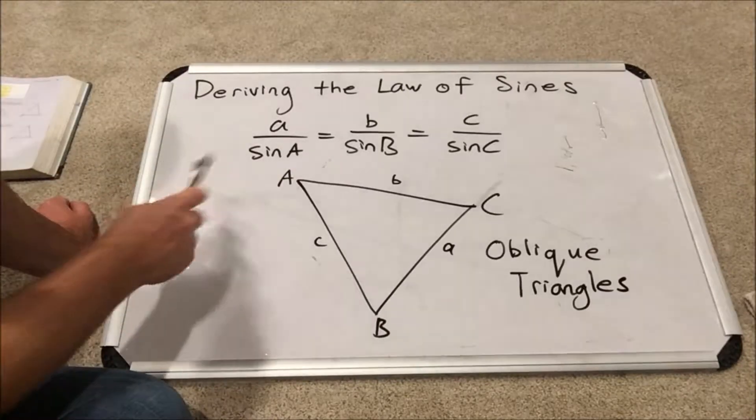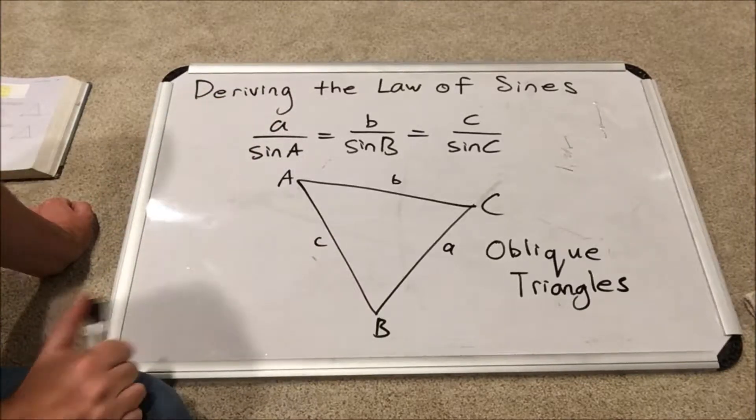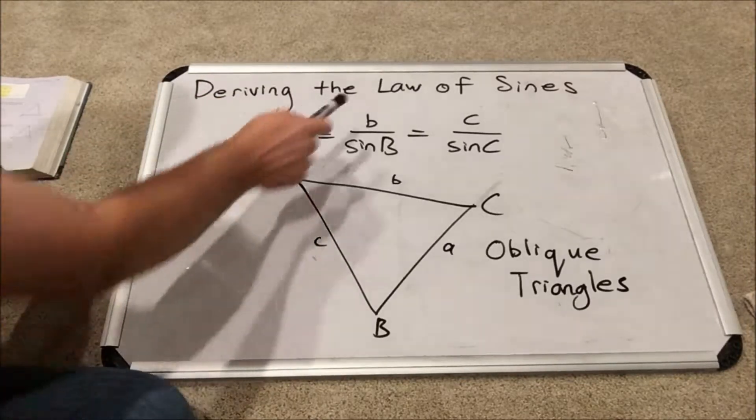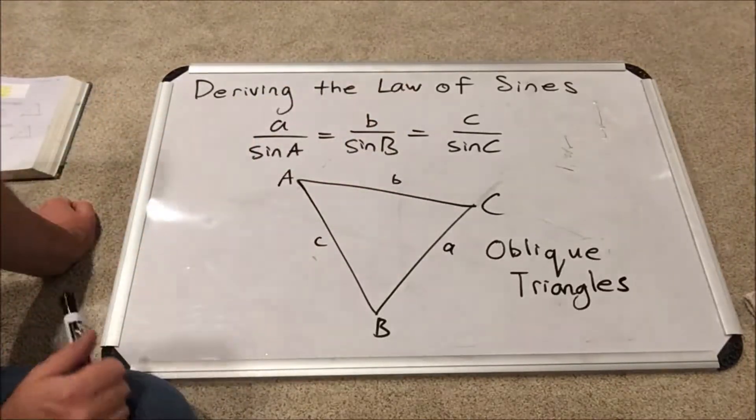The law of sines is often written as a triple fraction equation: A over sine A, B over sine B, and C over sine C.